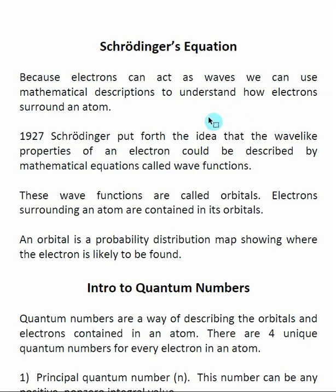Schrödinger's equation is actually quite complex, and some textbooks cover it in more detail. In general chemistry, we don't need to truly understand Schrödinger's equation. What we need to understand is what has come from it — that it applies wave equations to electrons. From this application, mathematical equations called wave functions have come from that. Wave functions are going to be called orbitals, transitioning from a mathematical state to a more descriptive one.